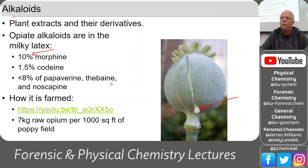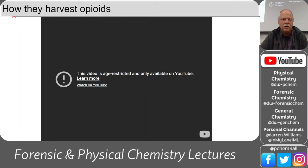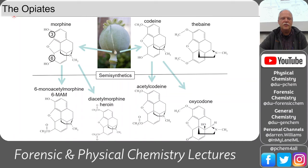The poppy is grown as a pharmaceutical substance on legitimate farms. The three molecules that come out of the plant naturally are morphine, codeine, and thebaine.